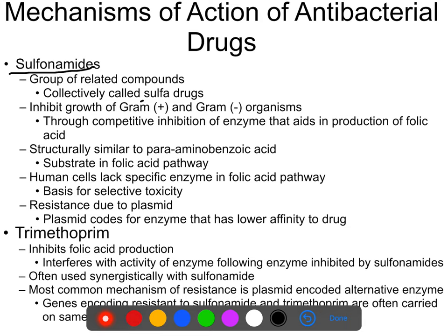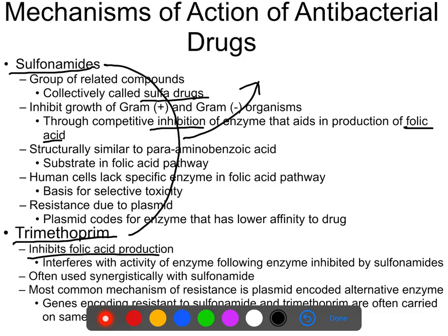You should know the group sulfonamides — I'll probably call them sulfa drugs. You should know this is one of the two main categories that inhibits folic acid production. Trimethoprim also inhibits folic acid production but does it in a different way; these two drugs are often prescribed together. You should definitely know that the sulfa drugs inhibit folic acid synthesis.